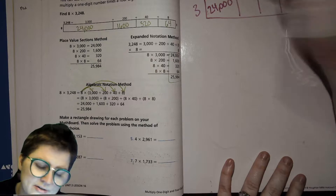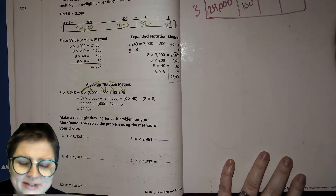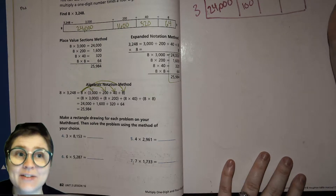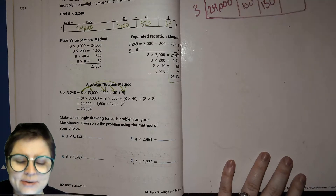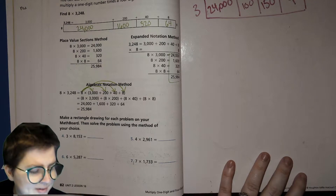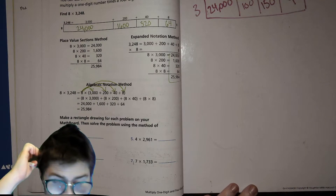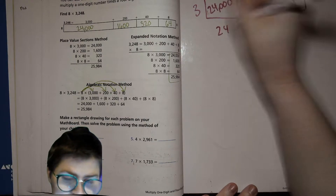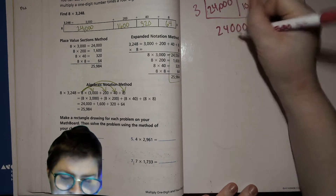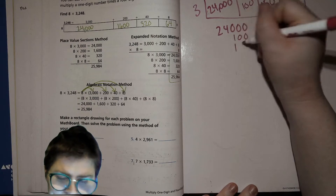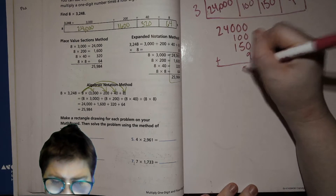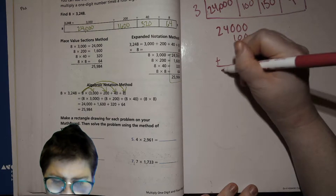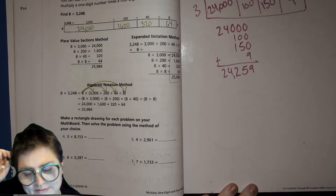3 times 100 is 300. 3 times 50 — 3 times 5 is 15, so 3 times 5 tens is 15 tens, or 150. And 3 times 3 is 9. So then we add those up: 24,000 plus 300 plus 150 plus 9, lining things up by place value. That gives us 24,459.